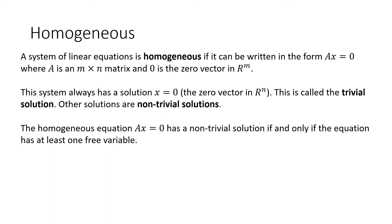Here's an important point: any homogeneous equation has a non-trivial solution if and only if the solution set has at least one free variable. Remember, when you take your system of linear equations, put it in an augmented matrix, and row reduce it, you can get a free variable. That free variable means there is a non-trivial solution to Ax equals zero. If you do not have a free variable, then the only solution is the trivial solution.